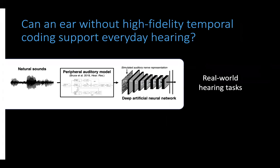To investigate these issues, we optimized contemporary deep learning models to perform real-world hearing tasks from simulated auditory nerve representations of natural sounds, asking whether phase lock spike timing is necessary to obtain human-like behavior.